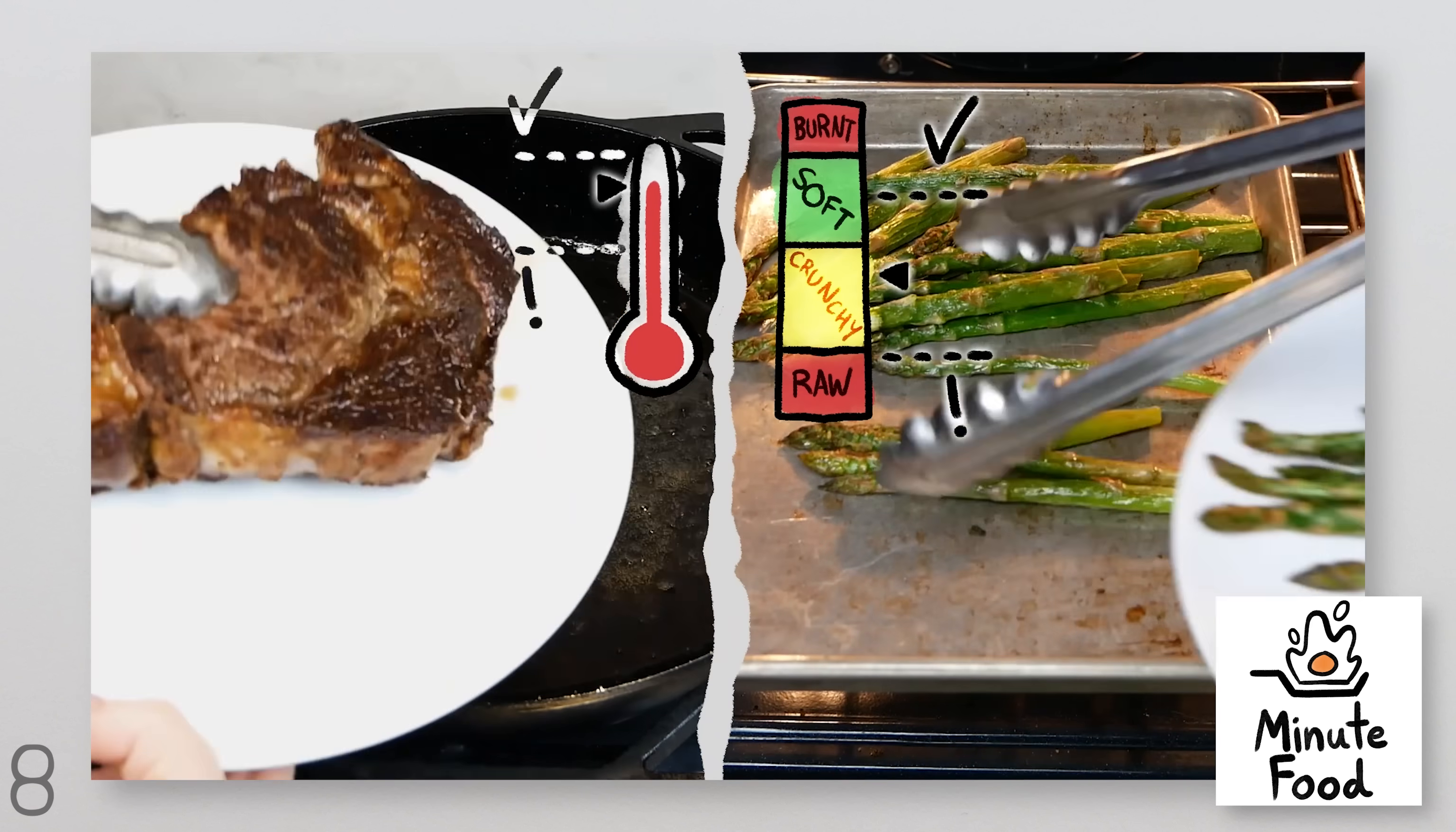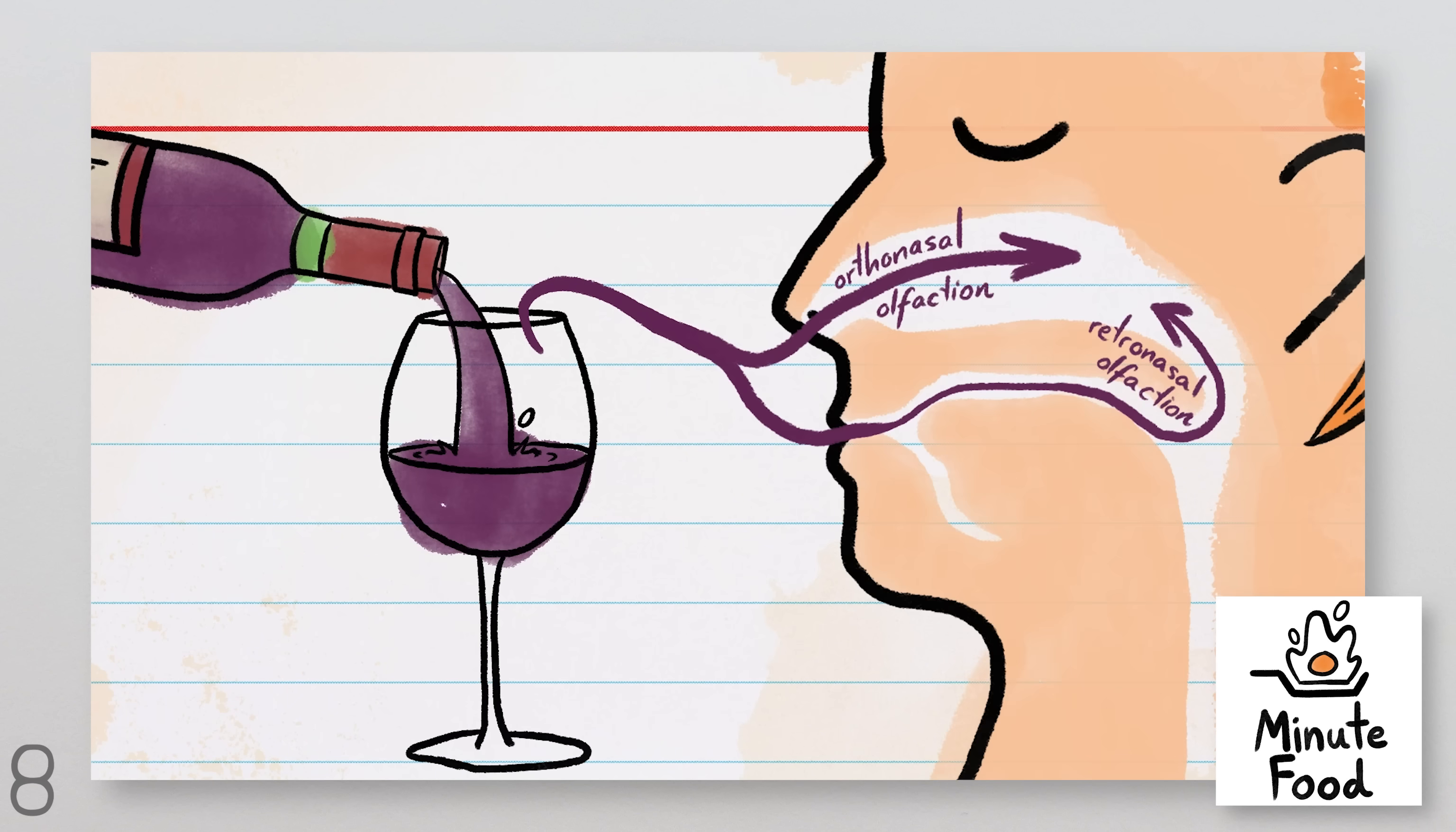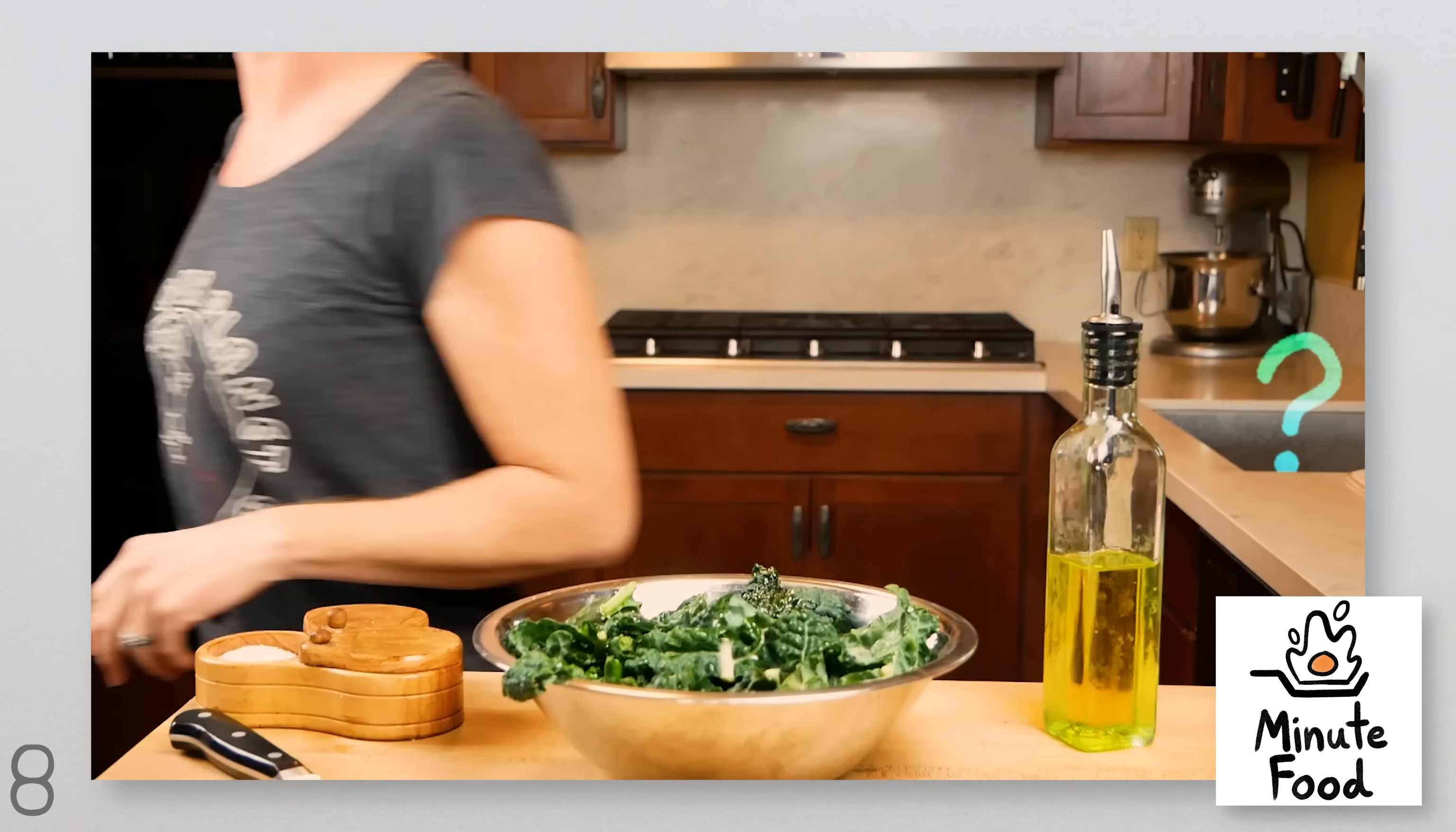So far, they've served up videos about the thermodynamics of overcooking, the many flavors of garlic, why wine smells funny, and why raw fish spoils so quickly, with more videos in the oven as we speak.